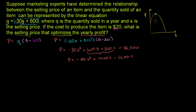We need to find the s-coordinate of the vertex. The easiest way to do that is to put this function into vertex form by completing the square. The first thing I like to do is factor out the negative 30, so we have a clean coefficient on the s².